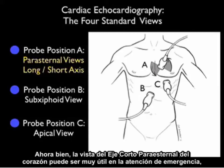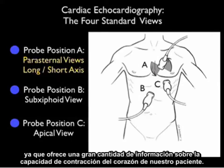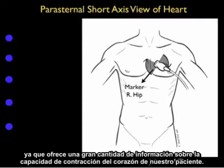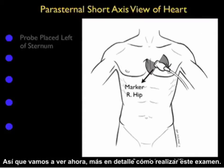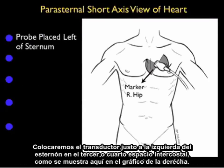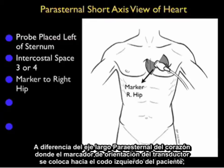The parasternal short axis view of the heart can be very helpful in emergency care as it gives a great deal of information about the contractility of our patient's heart. So let's look now further into how to perform this examination. The probe will be placed just left of the sternum at about intercostal space 3 or 4 as shown in the pictorial here to the right.